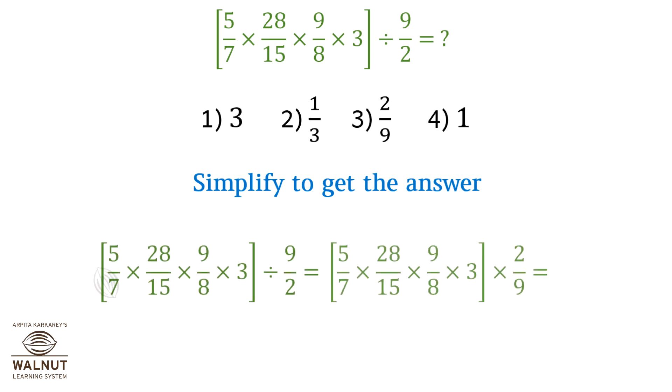First we convert the division into multiplication. We write 5 by 7 into 28 upon 15 into 9 by 8 into 3 in brackets, multiplied by 2 upon 9. We inverted the last fraction to convert to multiplication.